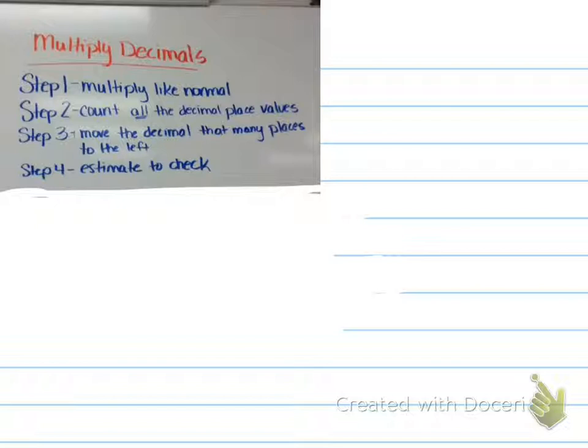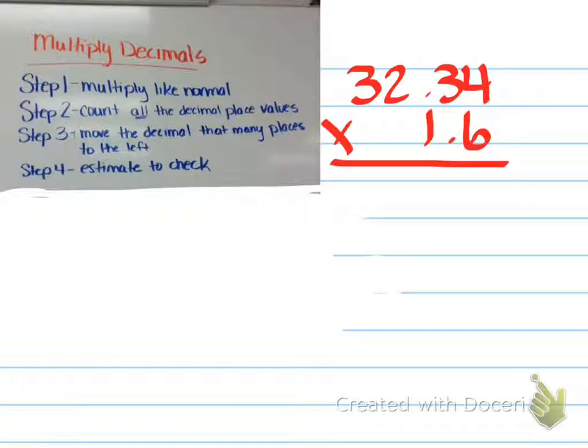So I'm going to do an example here. So example that I had used today, 32.34 times 1.6. So notice that I don't need to line up my decimals. I'm just going to multiply like normal. So multiplying like normal, I'm going to do 4 times 6. I'm going to fast forward through this because I don't think you need to hear me multiply.